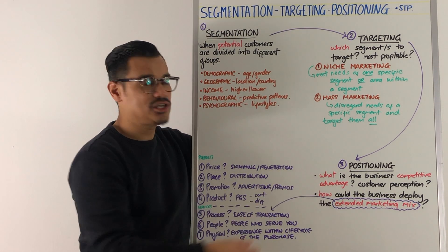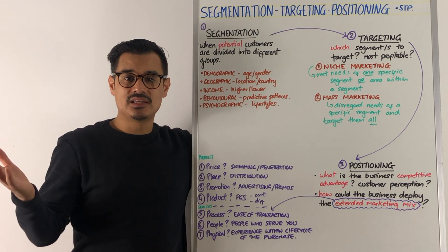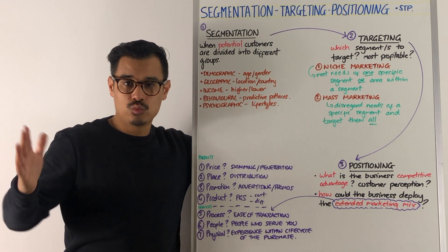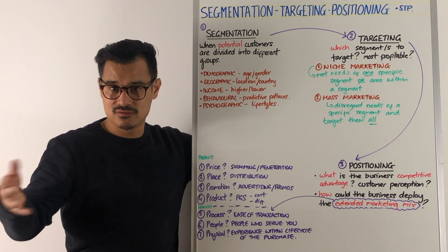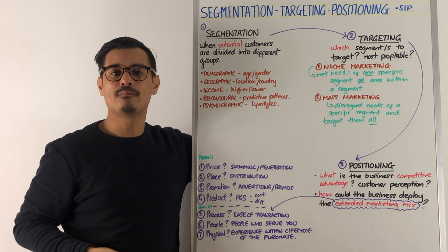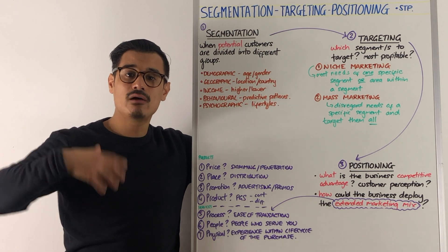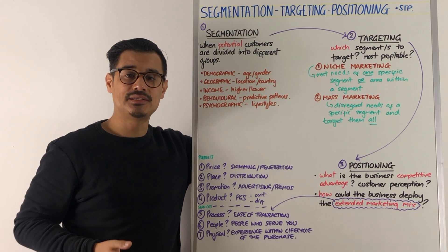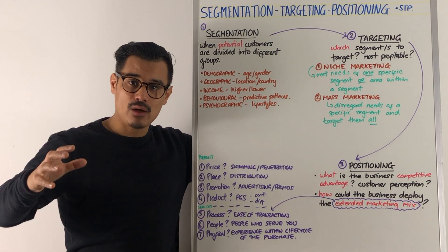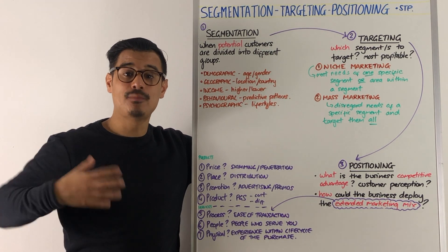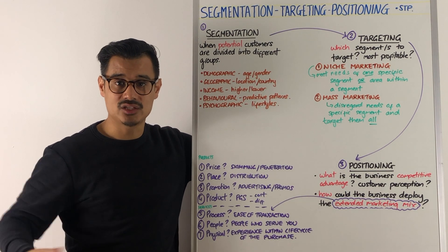Number three is positioning. Positioning is to do with what is the business's competitive advantage — what do you believe, as managers of the business, your competitive advantages are? And how do customers perceive you? Knowing that will help you to deploy your extended marketing mix, your seven P's.